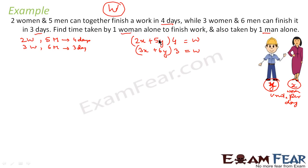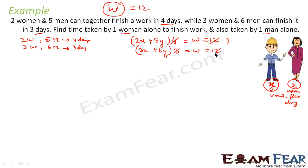To simplify, I take W to be 12, the LCM of 4 and 3, because 12 divides evenly by both. This gives me two clean equations: 2x + 5y = 3 (first equation) and 3x + 6y = 4 (second equation).